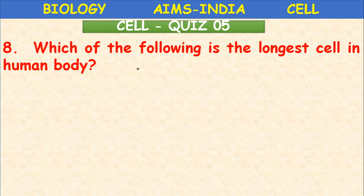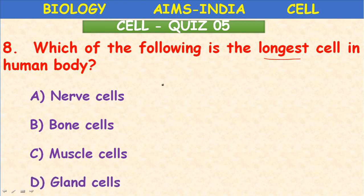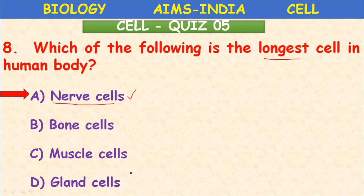Which of the following is the longest cell? Nerve cells, bone cells, muscle cells, or gland cells? The answer is directly nerve cells — they are the longest cells, several meters in size. Bone cells, muscle cells, and gland cells are short compared to nerve cells.